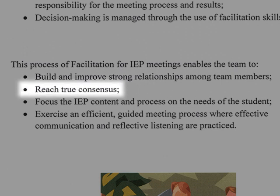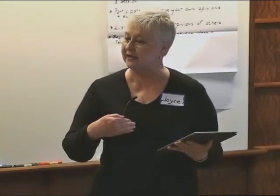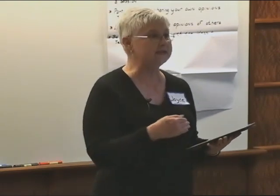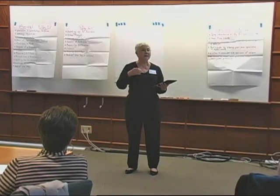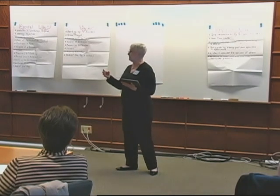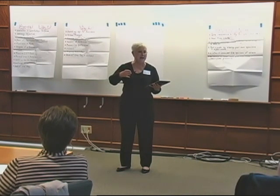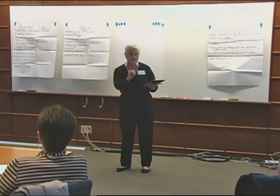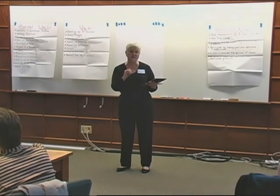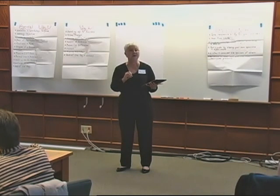We need to reach true consensus. Sometimes in education we think that consensus, which is mandated by federal law, is about everybody being what I call T and D — thrilled and delighted with everything presented at the IEP meeting. It's not. It means you can live with, support, and implement. So when a mother says, 'I'm not thrilled with this, but I'll go along with it,' you've got consensus. When a special ed teacher says, 'It isn't everything I want, but I guess it's okay,' you have consensus. We have to listen for that.